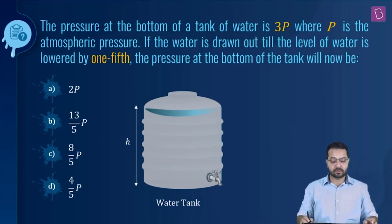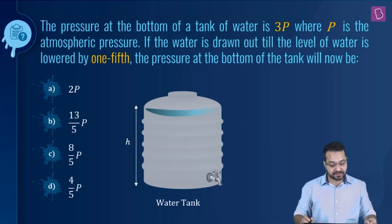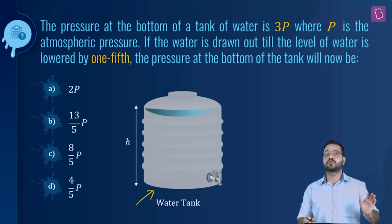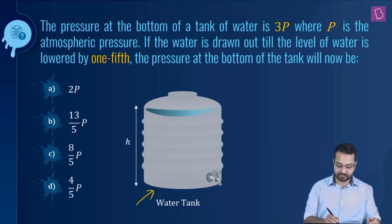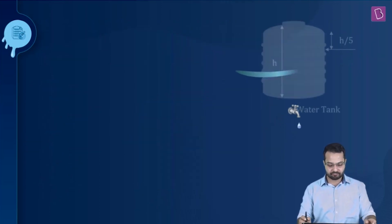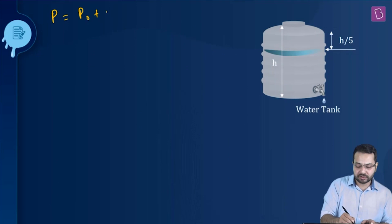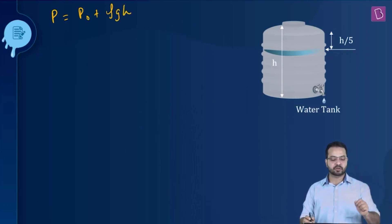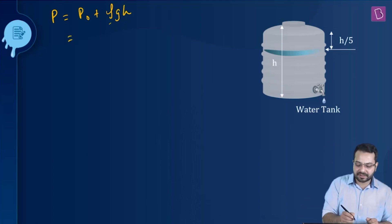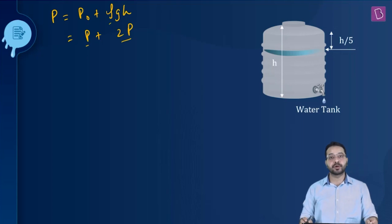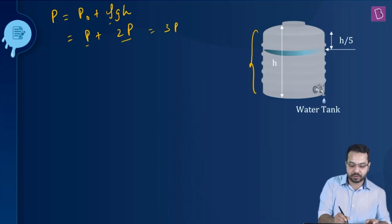The question is: the pressure at the bottom of a tank of water is 3p, where p is atmospheric pressure. If the water is drawn out till the level is lowered by one-fifth, what is the new pressure at the bottom? Initially, total pressure = atmospheric pressure + ρgh = p + 2p = 3p. So the pressure due to the liquid column alone is 2p, meaning ρgh = 2p.